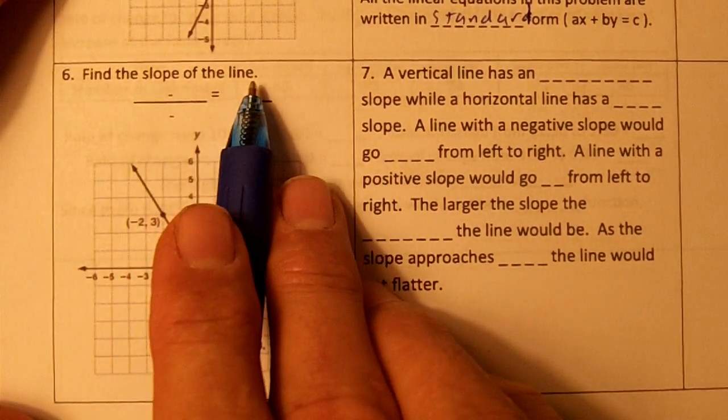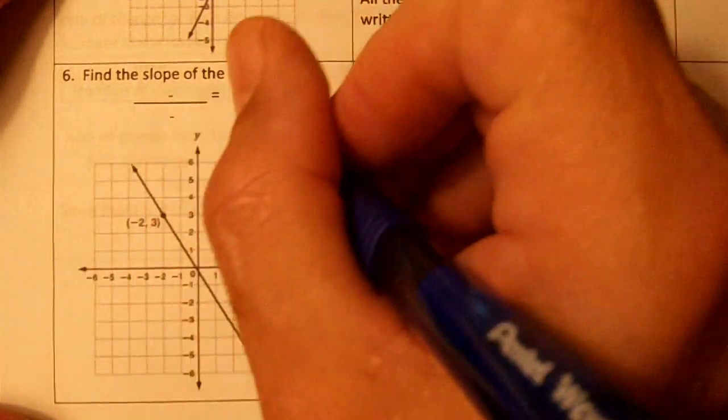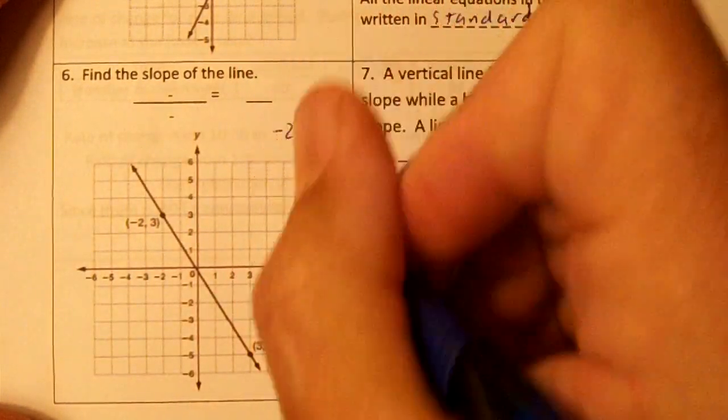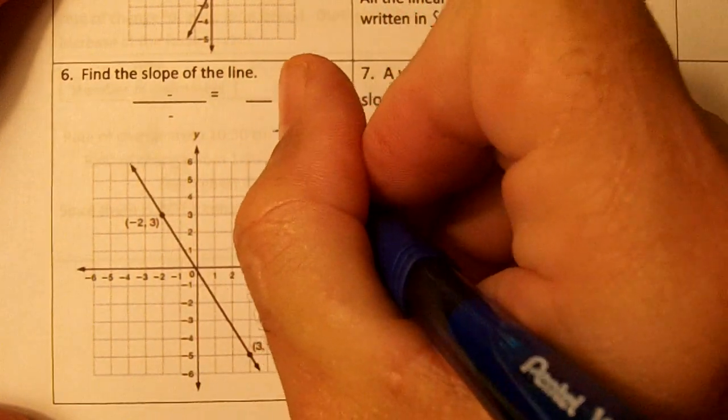Problem number six. Find the slope of the line. Our points are negative two comma three and three comma negative five.